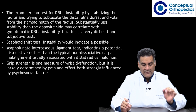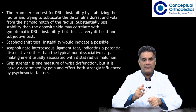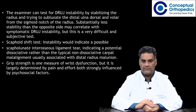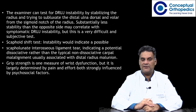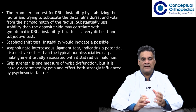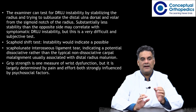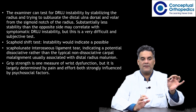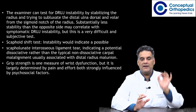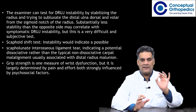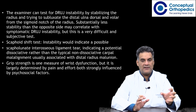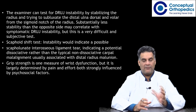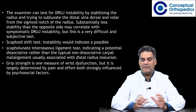Consistent reproduction of usual pain with ulnar deviation tasks is consistent with ulnocarpal impaction. The examiner can test for distal radioulnar joint instability by ballottement, as shown in the referenced videos. A scaphoid shift test can also be performed; instability would indicate a possible dissociative carpal instability rather than the typical non-dissociative carpal malalignment associated with distal radial malunion. Grip strength is one measure of wrist dysfunction but is largely determined by pain, effort, and psychosocial factors.